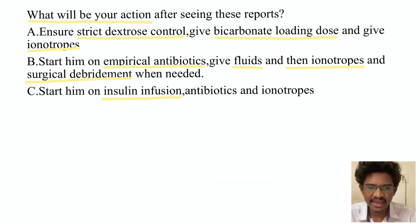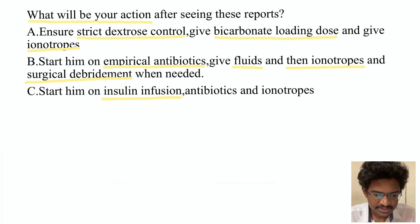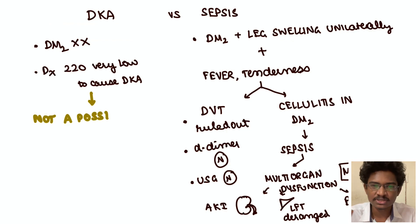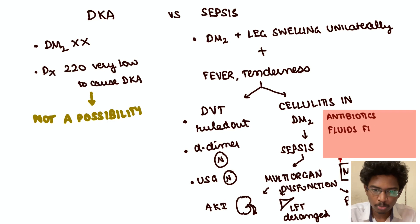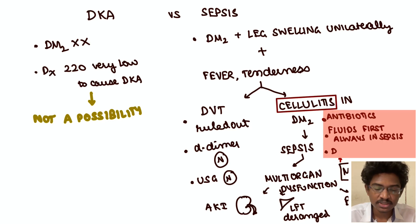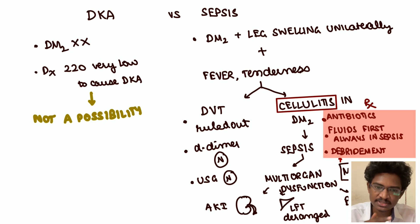For management, the options are: (A) strict dextrose control, bicarbonate loading, and inotropes; (B) empirical antibiotics, fluids, then inotropes, and surgical debridement when needed; (C) insulin infusion, antibiotics, inotropes; (D) thrombolysis. Thrombolysis is only for DVT — ruled out. Insulin infusion is for DKA — not DKA here. The most appropriate answer is B: empirical antibiotics to cover cellulitis, aggressive fluid resuscitation first before inotropes, and surgical debridement to remove the focus.